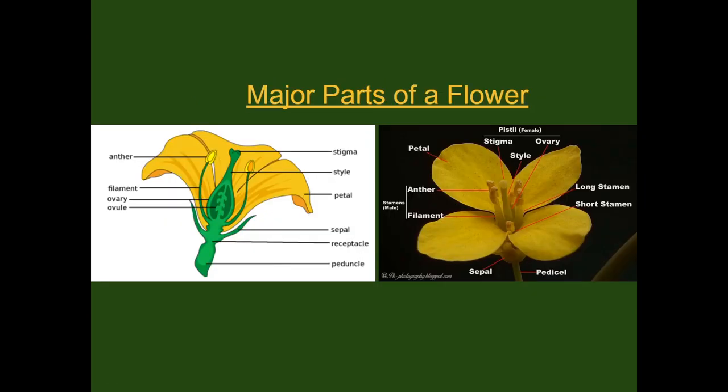Now that we've talked about their adaptations, let's talk a little bit more about flowers and the basic structures. Flowers can be divided up into sepals that protect the developing petals, petals that mostly attract pollinators, male parts that make the pollen which are collectively called the stamen, and female parts collectively called the pistil.